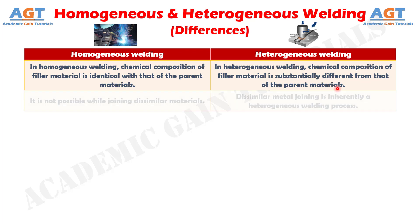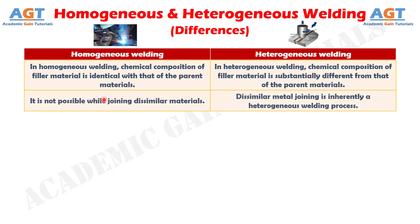Difference number 2: Homogeneous welding is not possible while joining dissimilar materials, whereas dissimilar metal joining is inherently a heterogeneous welding process.